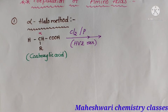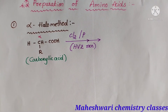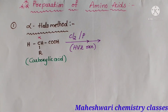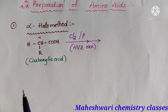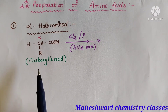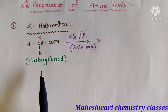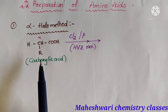Today our topic is the preparation of amino acids. The first method is the alpha halo method. Based on the alpha halo method, we have to prepare amino acids. For this purpose, first I have taken a carboxylic acid.